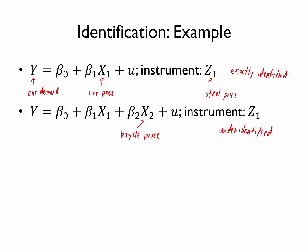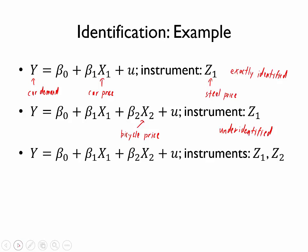We will go through a discussion of why that is shortly. But suppose that we add a second instrument — perhaps z2 is the price of aluminum, another input into either cars or bicycles. We now have two instruments and two endogenous independent variables, so we are once again exactly identified. And because we have exact identification, it should once again be possible to estimate this model.